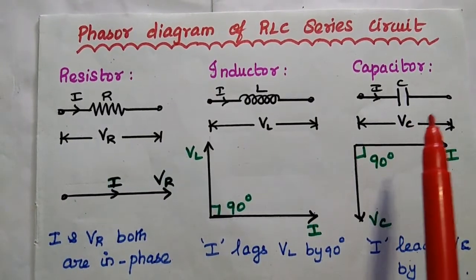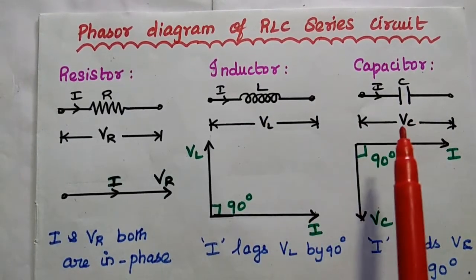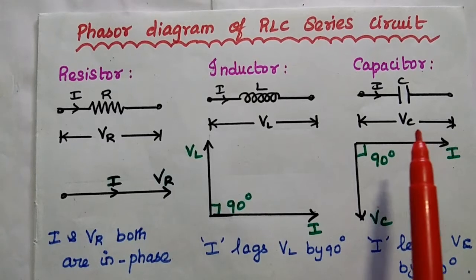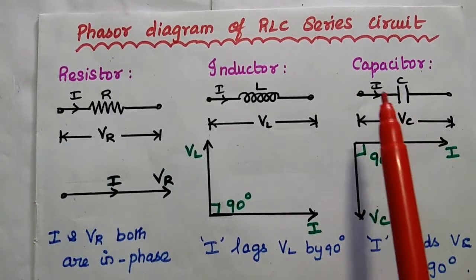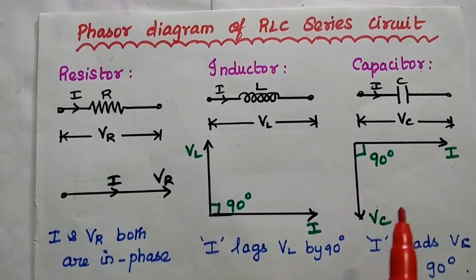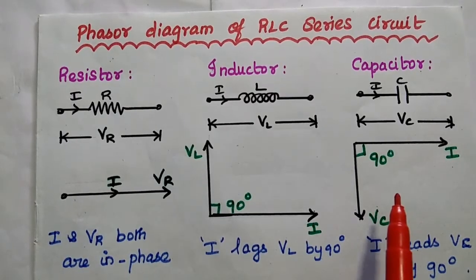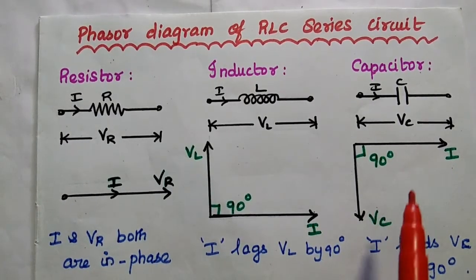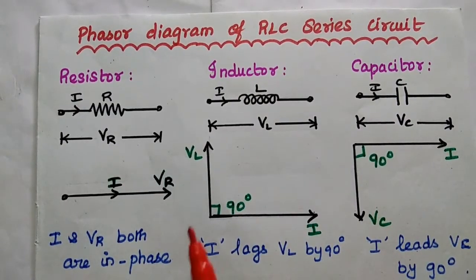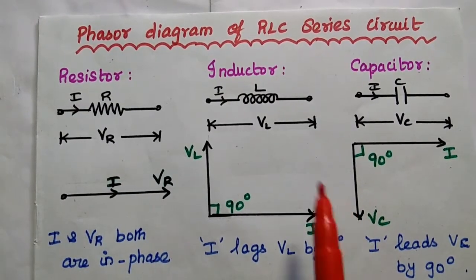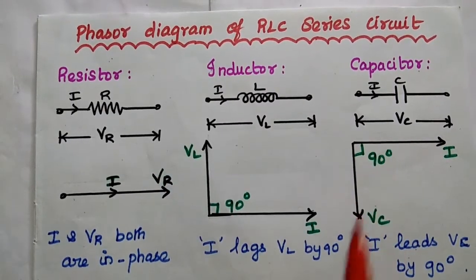For the capacitor, it is just the opposite of the inductor. To find the voltage drop across the capacitor, we take the integration of the current. So the current is leading Vc — current leads the capacitor voltage by 90 degrees. These three are the phasor diagrams for the respective elements: resistor, inductor, and capacitor.